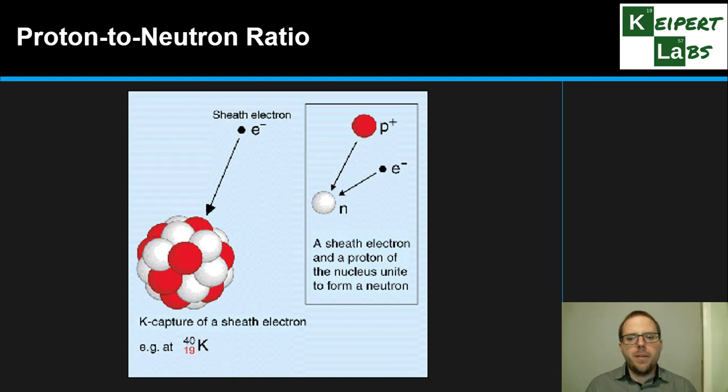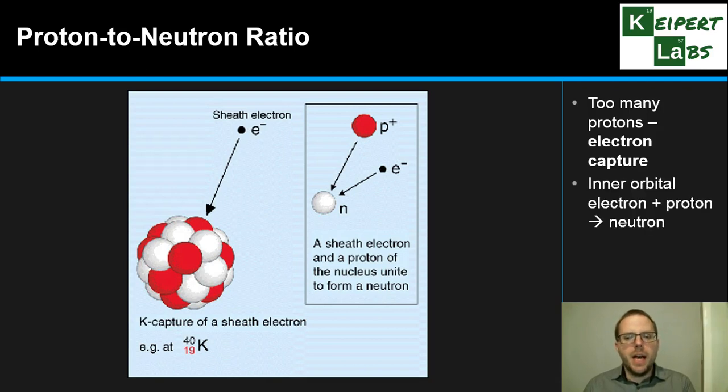Now what happens if we have too many protons, or too few neutrons? We undergo a process called electron capture. What this is involving is the nucleus of the atom actually capturing an inner orbital electron, or what's termed a sheath electron, capturing it from an inner orbital and uniting or combining with a proton together to form a neutron. So it's sort of the opposite process of what we were just looking at. And what that means is the same sort of outcome - we've reduced one proton and we've increased one neutron, so the balance has shifted back to being more stable. It's all really about which side of that balance is too heavy, is too large, and then bringing it back to equilibrium. So that's that process called electron capture.